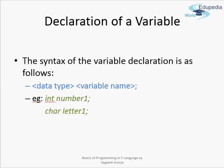Here is the syntax for declaring a variable in C, shown in blue. The first part is the data type name — we will study more on data types in Part 2 of this chapter — followed by the variable name. For example, 'int number1' where int is the data type and number1 is the variable name. In the second example, 'char letter1' where char is the data type and letter1 is the variable name.